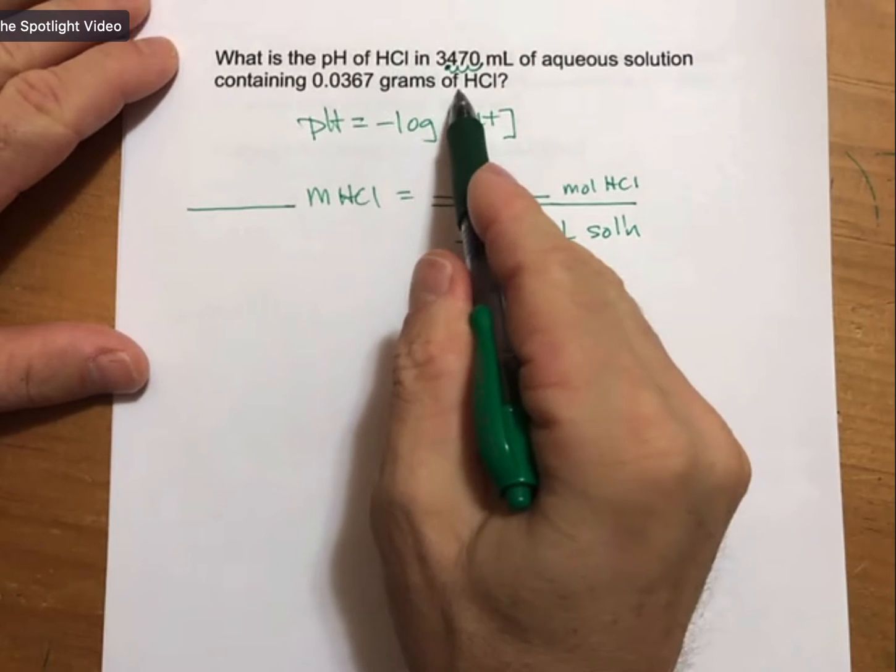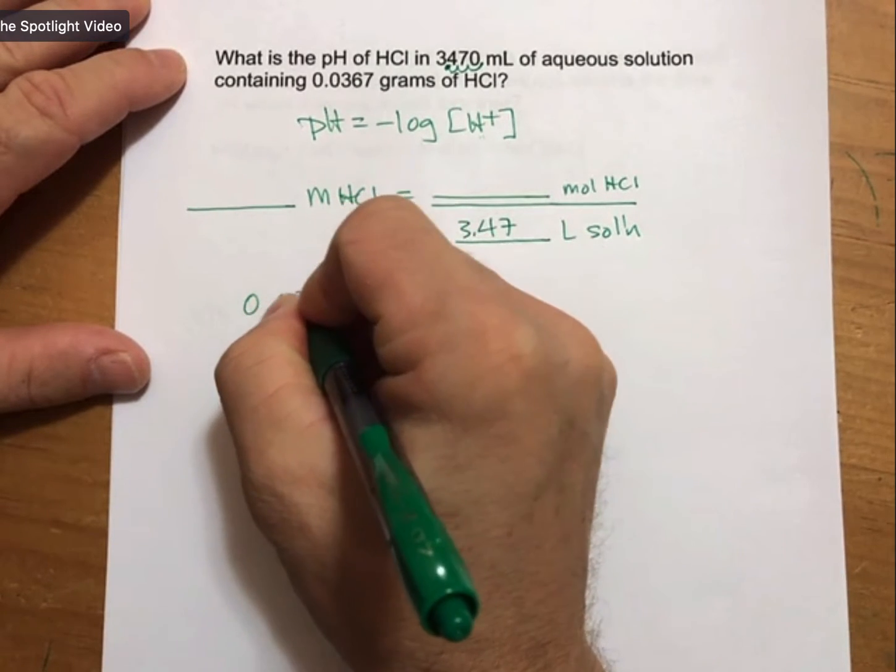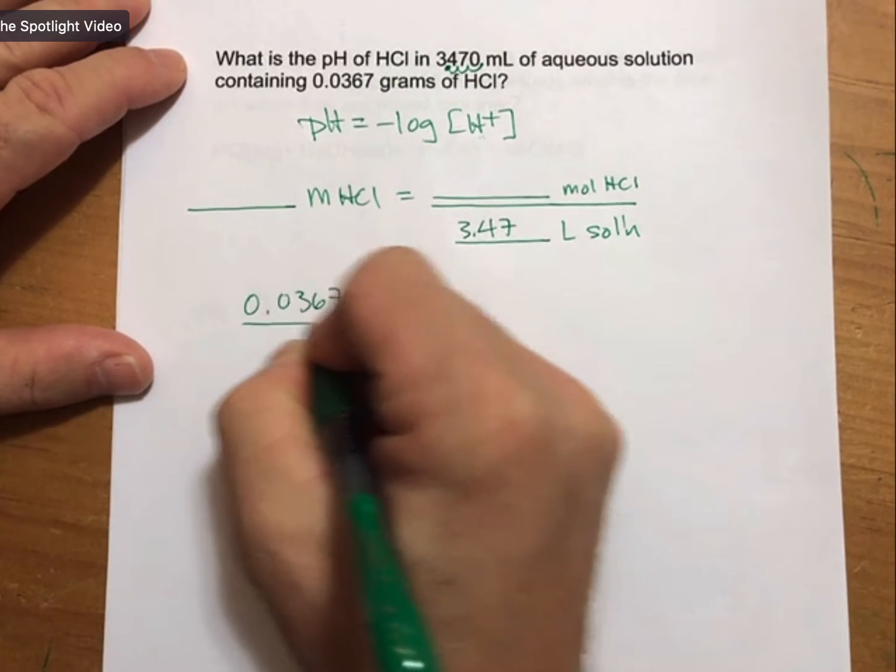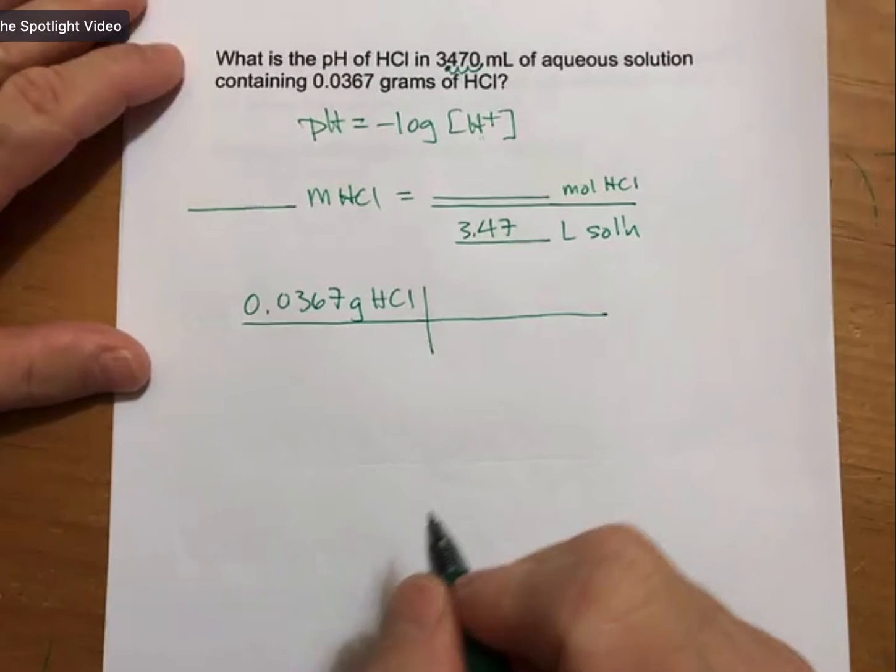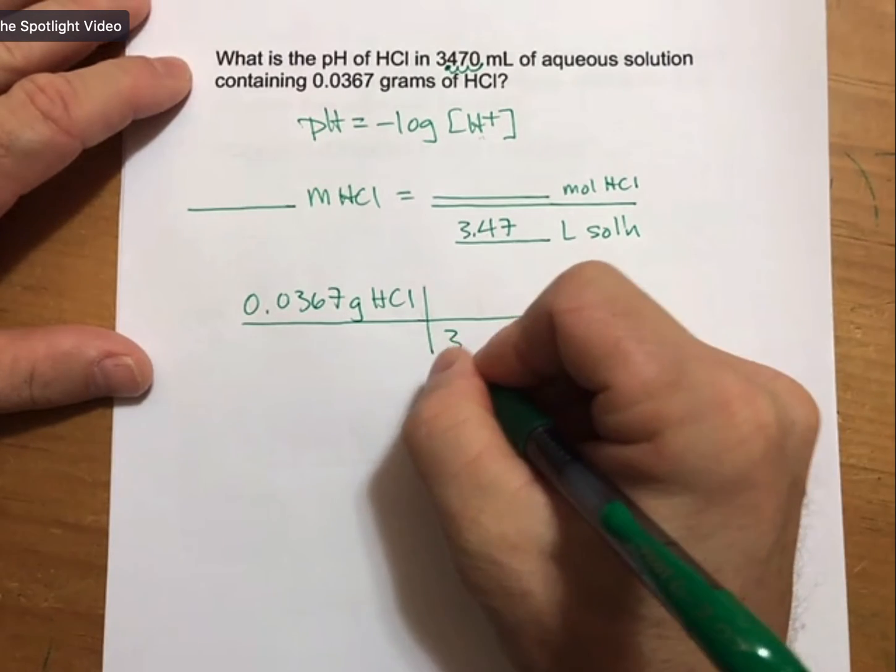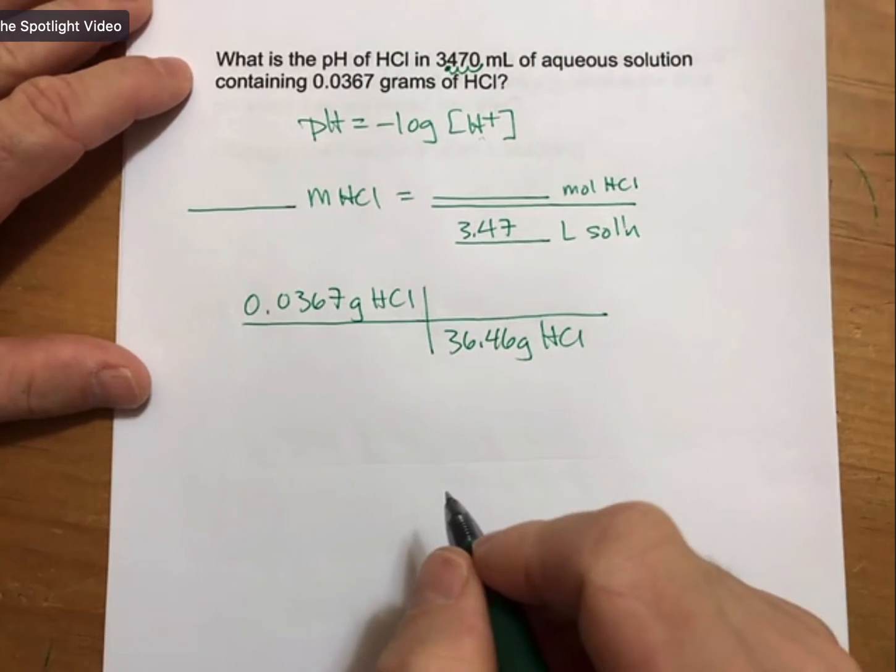I have my grams of HCl. I can convert that into moles. The molar mass is 36.46 grams of HCl per one mole.